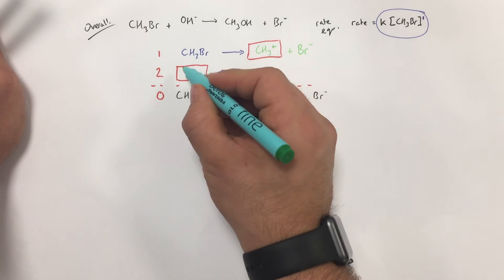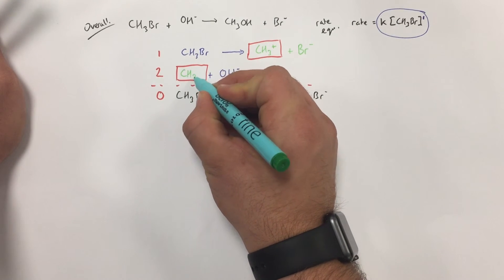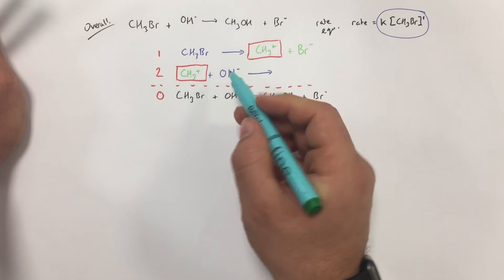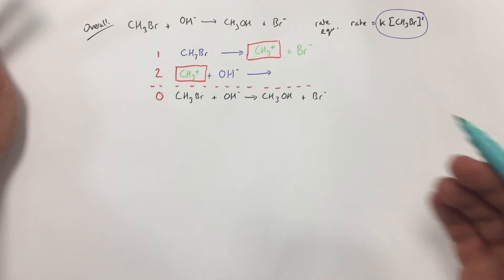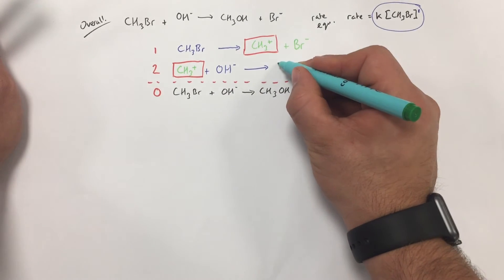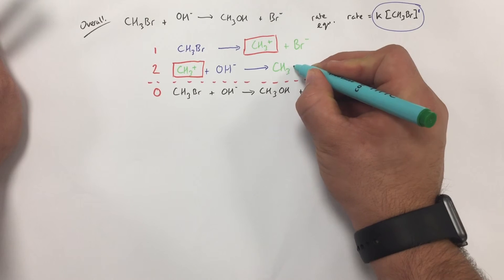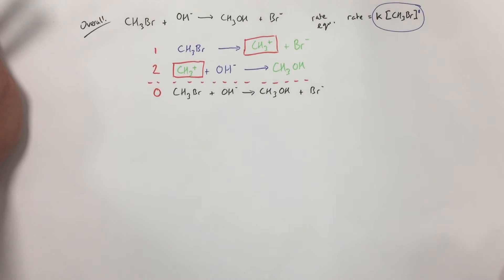That therefore is going to be our intermediate that's going to react here. CH3 plus will then combine with our OH minus, so the charges will cancel and we will form CH3OH, which is our final step.